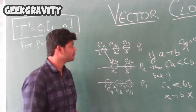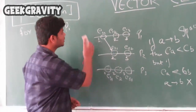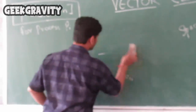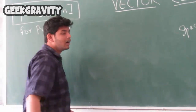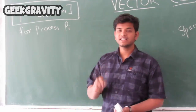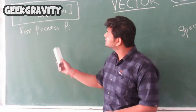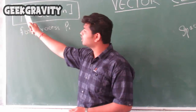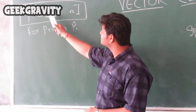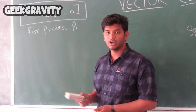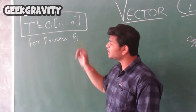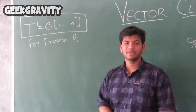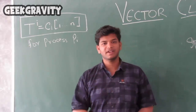In vector clock, a vector is maintained for each process, and there is a total order. Let T_i be a vector of process i and C_i be the timestamp of the corresponding process. It seems complex at first but let us understand with an example — it will be very clear.